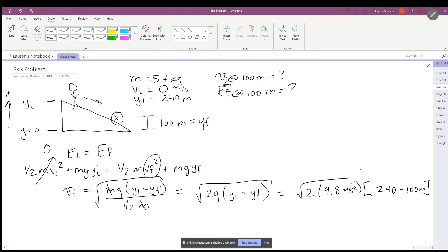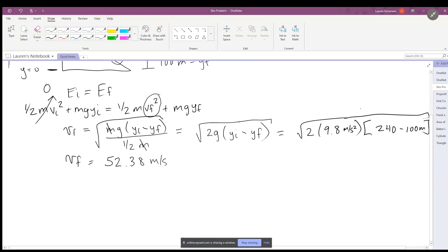Take the square root of all of that, gives us an answer of 52.38 meters per second, which is very fast. If you have a frictionless slope, I guess that's how fast you're going to be going.